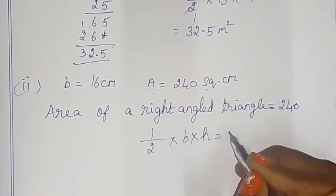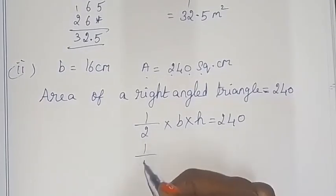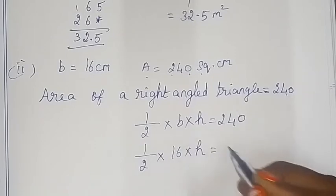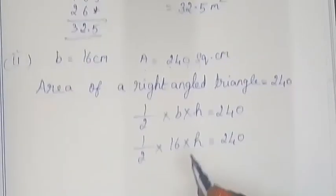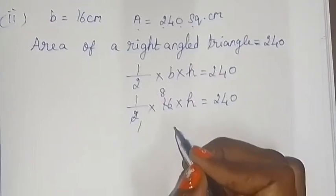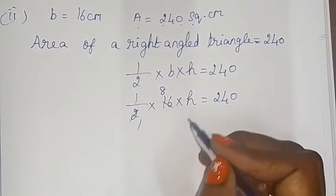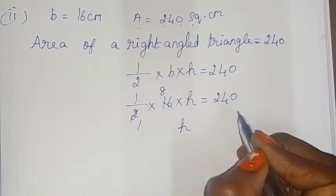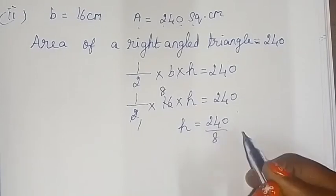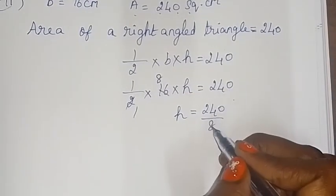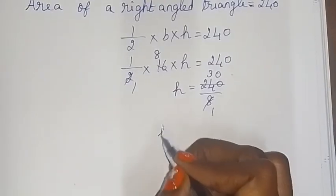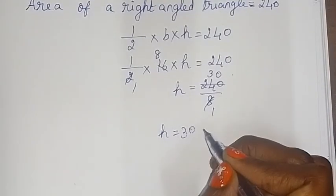In another triangle problem, the area is 240 and we work through: 2 × 8 = 16, and using division, h = 240 ÷ 8 = 30 cm. So h is equal to 30 cm.